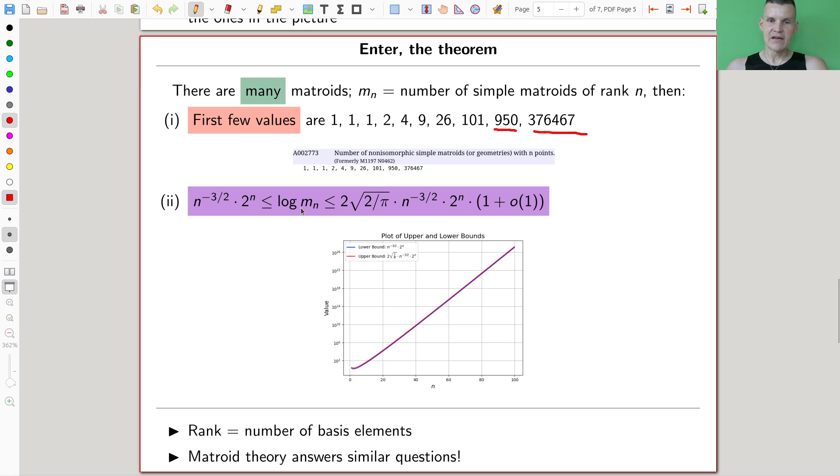But you can kind of estimate, in a really good estimate, how many there are. And there are a lot. So here's this estimate. So the log of that number, that makes it smaller. Taking the log makes something very small. It's usually small. And the log of that number is still exponential. So there's really, really a lot of them. So the log of that number is bound between those two things.